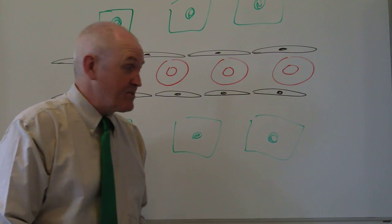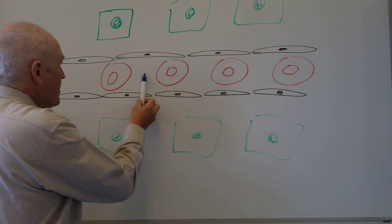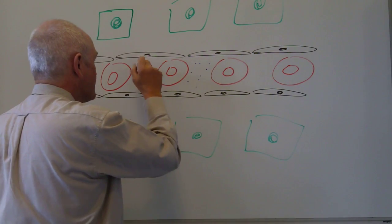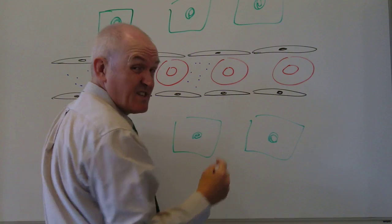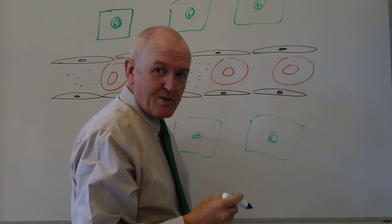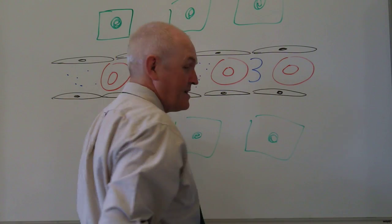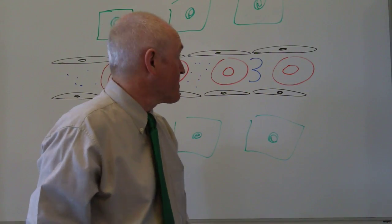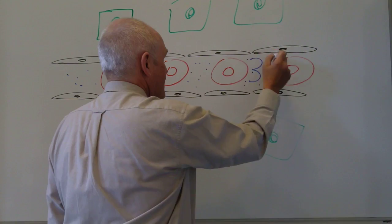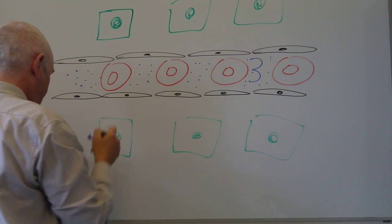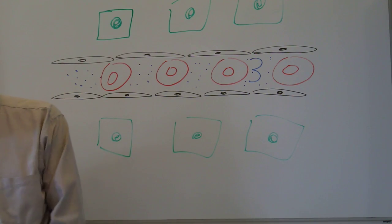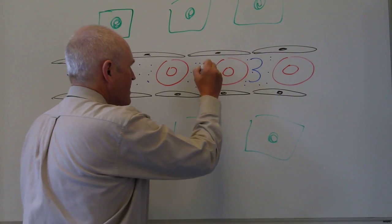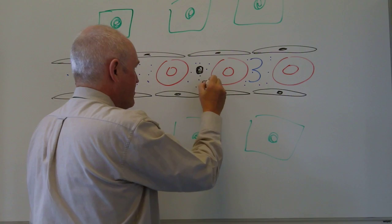The blood has red cells in it, but it also has plasma. The plasma consists of water molecules — in a fit lean young man, there's going to be about three liters of water in the plasma. There's probably about five liters of blood altogether, but two liters of that is going to be the red cells, so the plasma is going to contain about three liters of water.